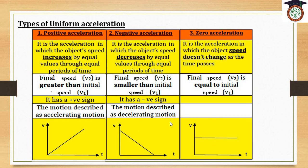Finally, we have zero acceleration: this is acceleration in which the object's speed is constant and doesn't change as the time passes. So the final speed will equal the initial speed — there is no acceleration. It is represented by a straight line parallel to the time axis.